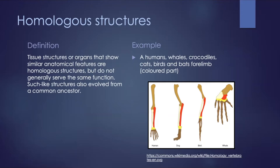Even though bones such as the humerus (the upper arm), ulna and radius (the forearm), carpals (the wrists), the metacarpals (the hand), and phalanges (the fingers) are present in human beings, these structures also occur in other species as similar bones in shape adapted to the environment, suggesting that these animals have had a common ancestor.